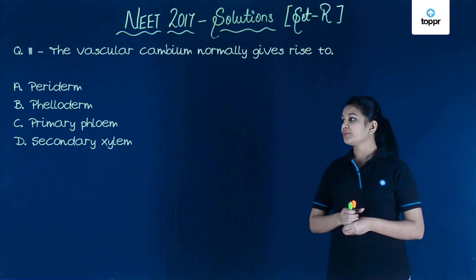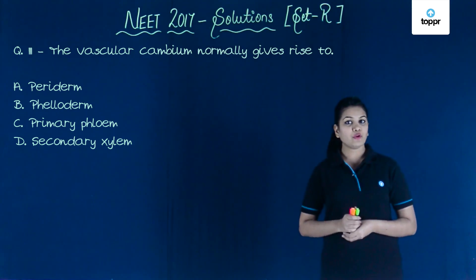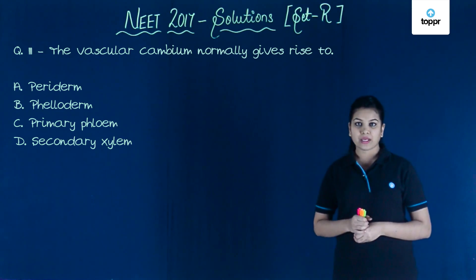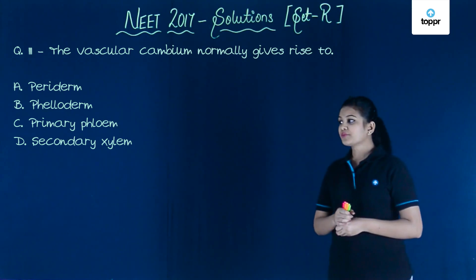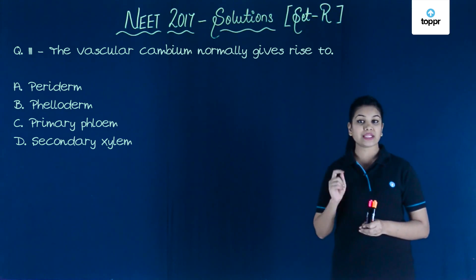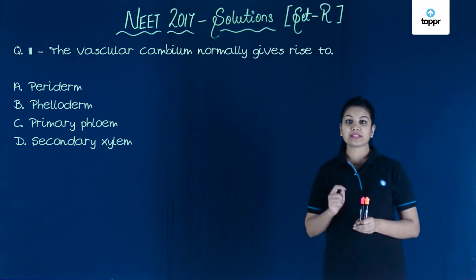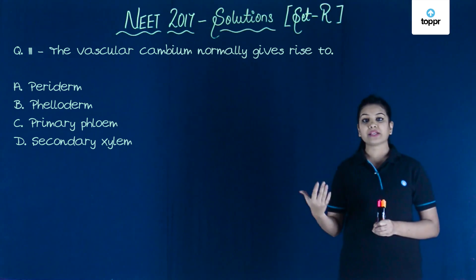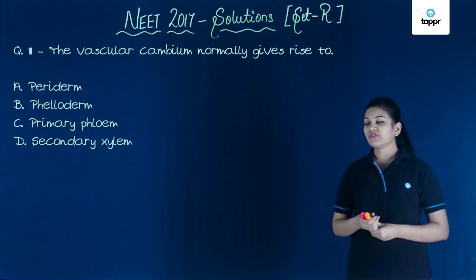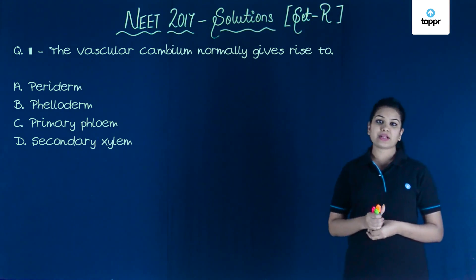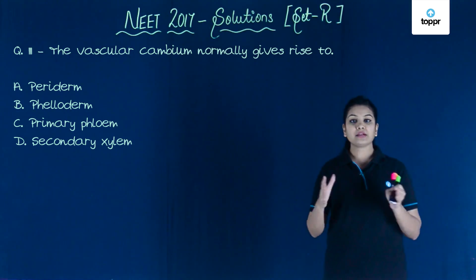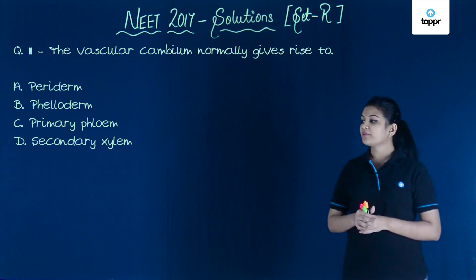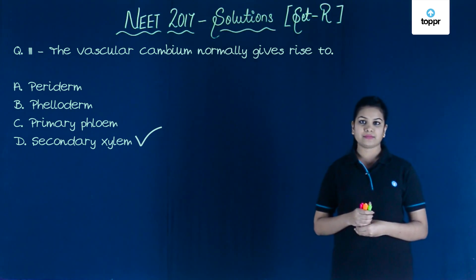Option three is primary phloem, which is formed by the procambium. The last option is secondary xylem, and secondary xylem is the one produced by the vascular cambium. It results in increasing the girth of the plant. So the answer is option four: secondary xylem.